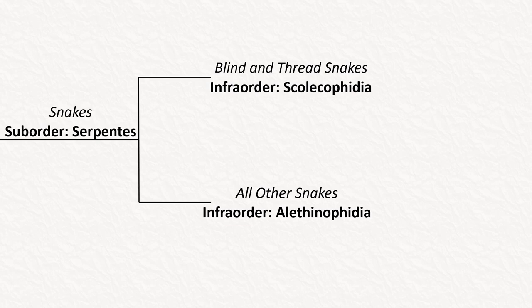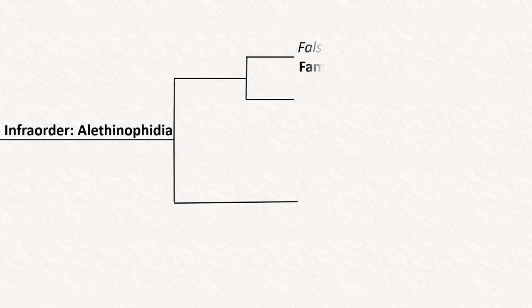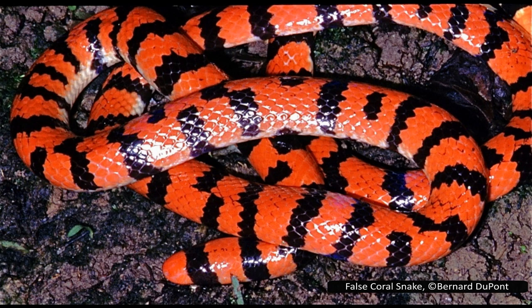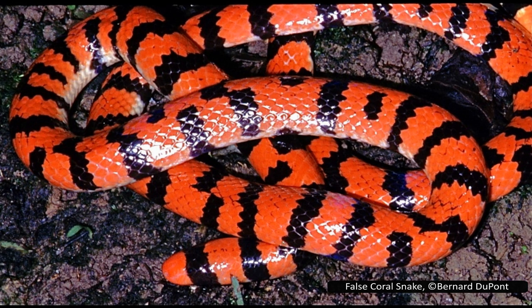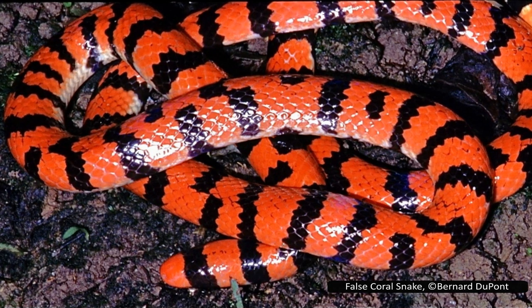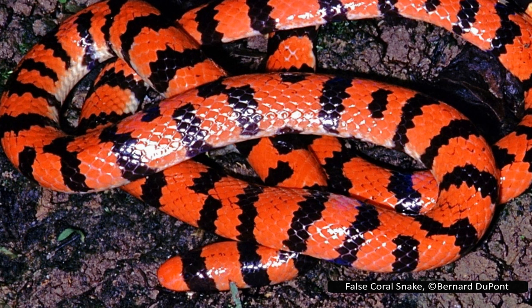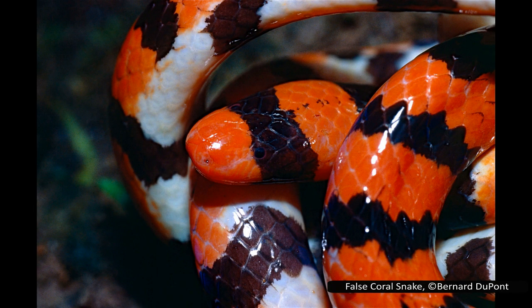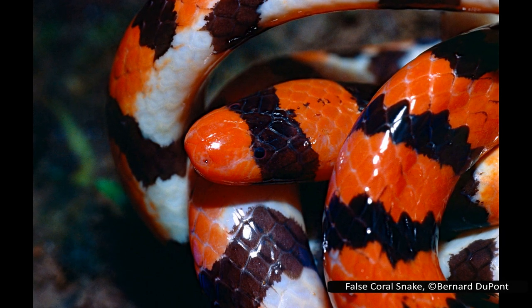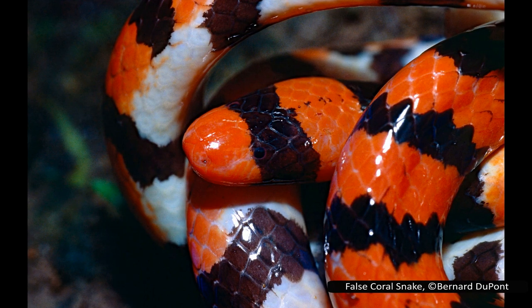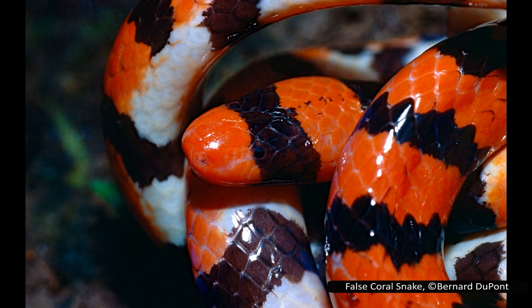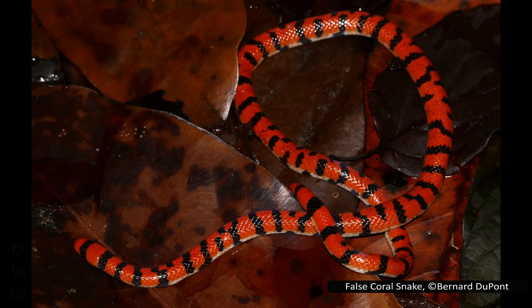Returning to the overall phylogeny, let's now look at the infraorder Alethinophidia, which contains all remaining snakes. Aniliidae is likely the first family I have mentioned that you would recognise as a snake. There is only one species — the American pipe snake, also known as the false coral snake — which has the stereotypical black and red coloration seen in some true coral snakes. Unlike them, it is not venomous and feeds on a variety of amphibians and reptiles. It has reduced eyes and is believed to most closely resemble the common ancestor between snakes and their lizard ancestors, as it still has a very lizard-like skull. It is found in northern South America, from Venezuela to Suriname through Ecuador and Brazil.